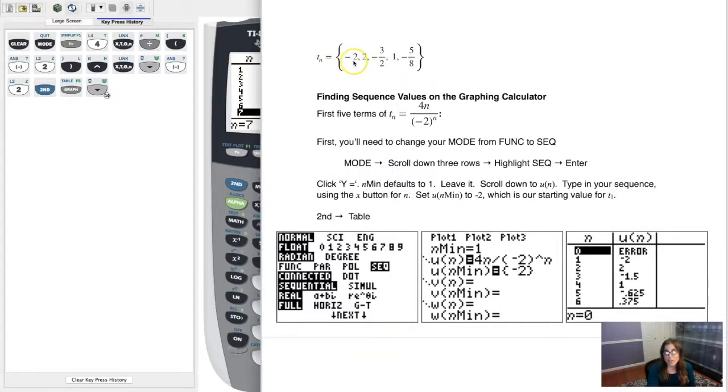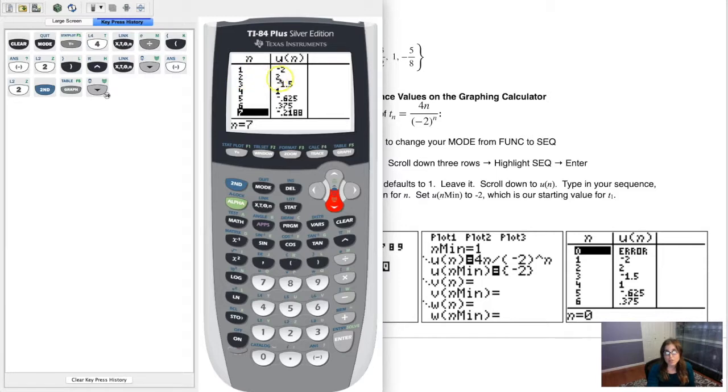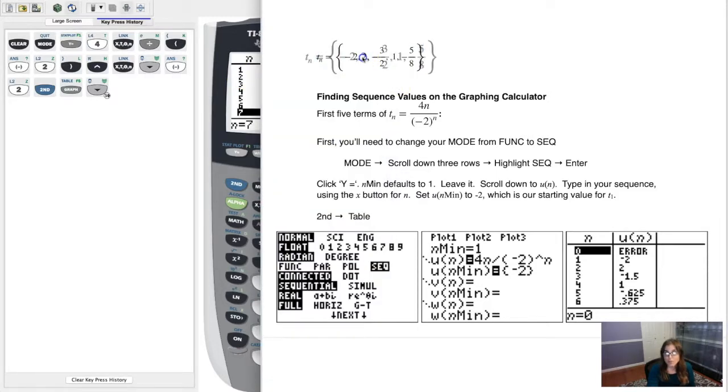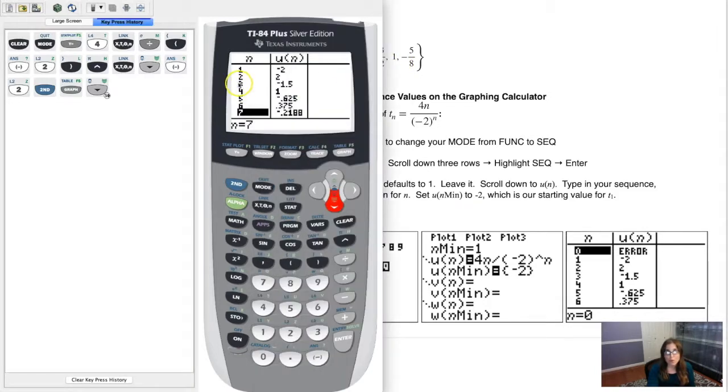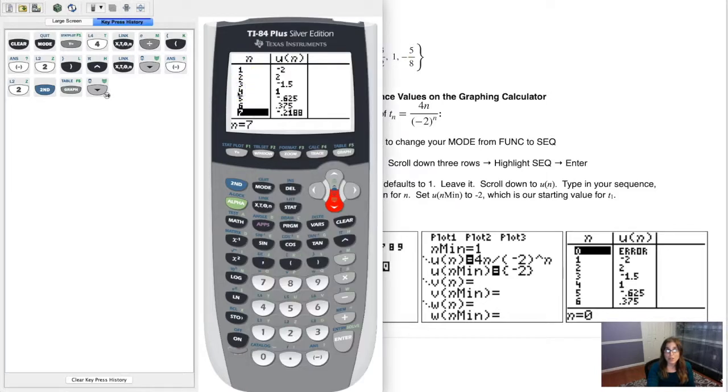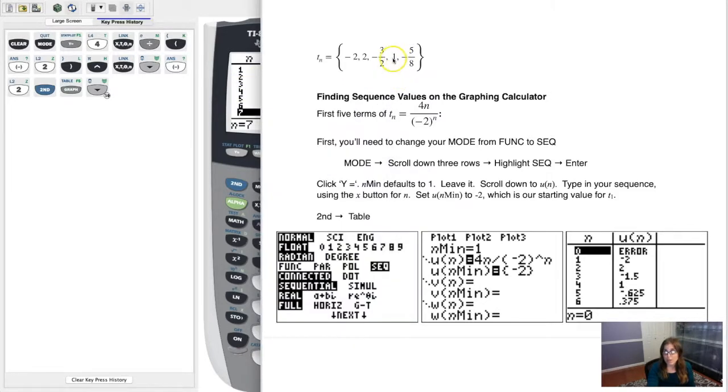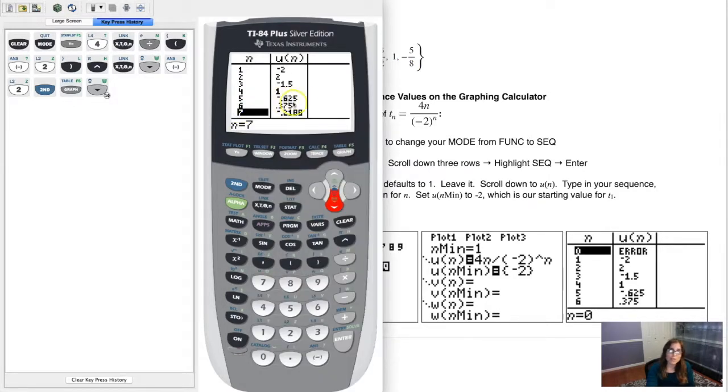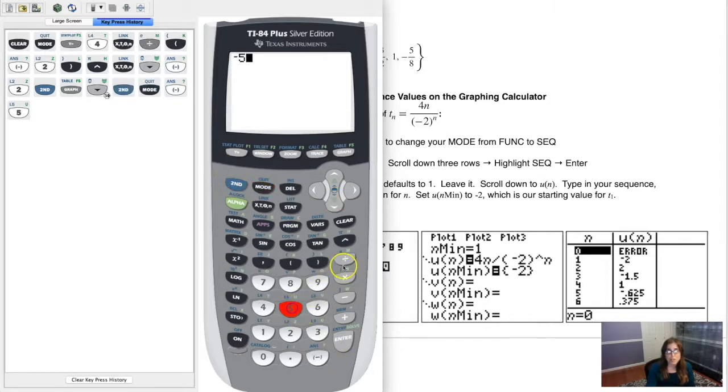t sub 1 was negative 2. Well, that matches what I got. The second term in my sequence was positive 2. That also matches what I got. We got positive 2. What was the third term? It was negative 3 halves. Well, the third term here is negative 1.5, and negative 1.5 as a decimal is negative 3 halves, the fraction. The fourth term in my sequence should have been 1. Well, there it is. What's the fifth term? This is negative 0.625, and I would guess, and I'm confident I'm going to be right, that negative 5 eighths as a decimal is negative 0.625. Let's just check here. Negative 5 divided by 8. Sure enough, it's negative 0.625.